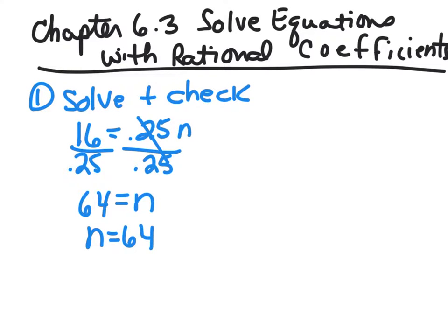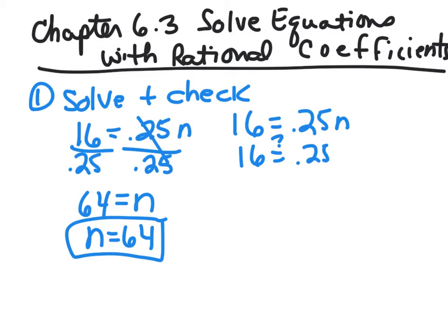And then to check this, write the original equation: 16 equals 0.25N. And N equals 64. The value of N is 64, so we're going to substitute in and ask ourselves, does it equal that? And when we multiply it out, we get 16 does indeed equal 16. So box that in.